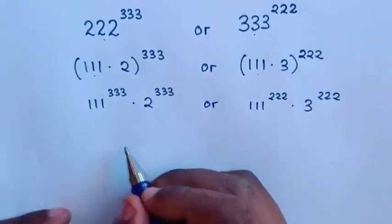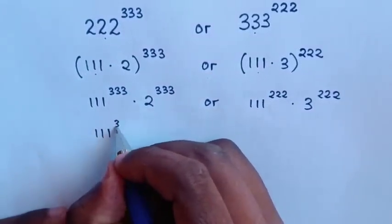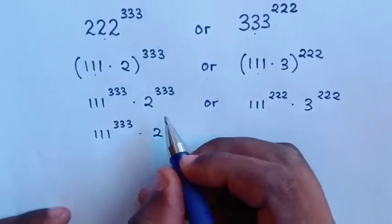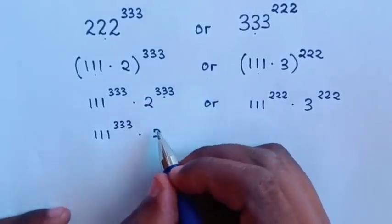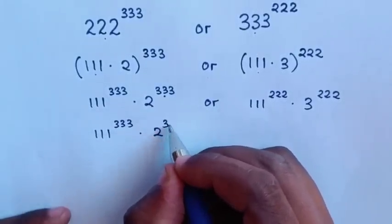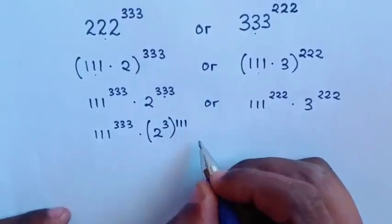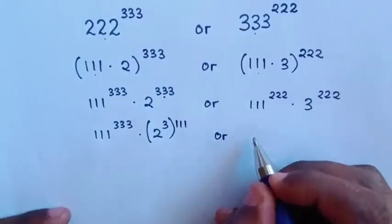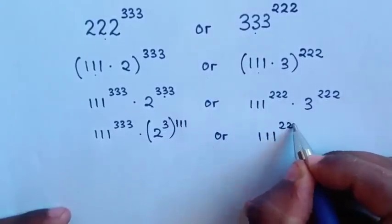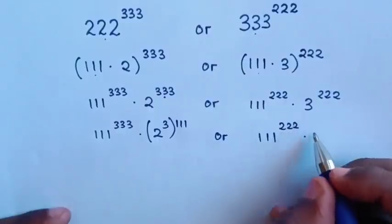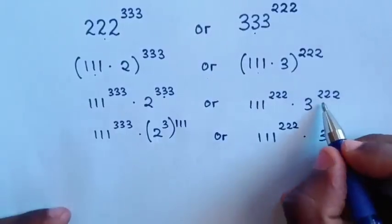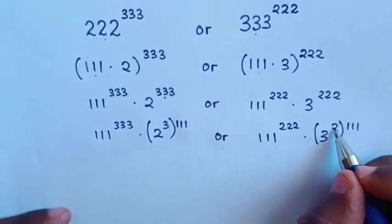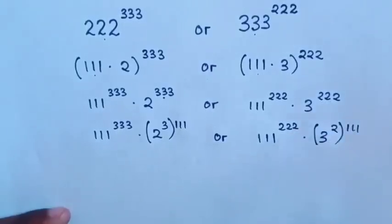From here, 111 power of 333 times 2 power of 333 is the same as 2 power of 3, bracket power of 111. So this times this equals this one. Or, 111 power of 222 times 3 power of 222 is the same as 3 power of 2, bracket power of 111. So this times this equals this one.